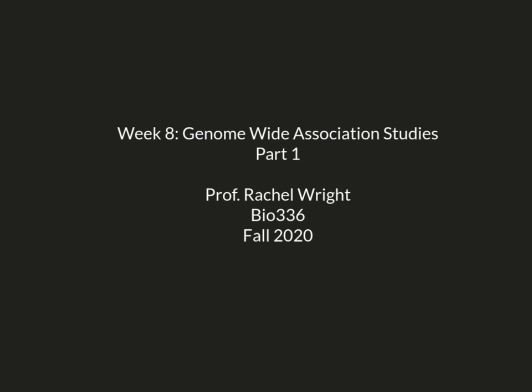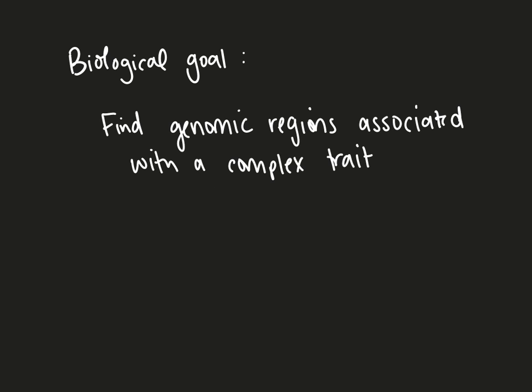Hi all. This week we're going to start to talk about genome-wide association studies, or GWAS. In a GWAS experiment, your biological goal is to find genomic regions associated with a complex trait. I'm going to spend the rest of this video explaining this sentence. What do I mean by genomic regions? What do I mean by associated with? And what do I mean by complex trait?